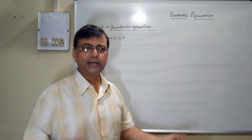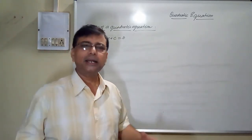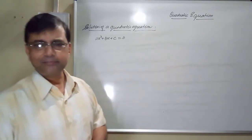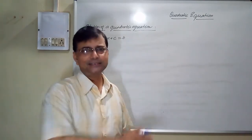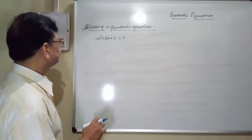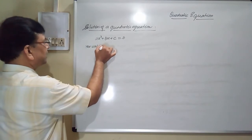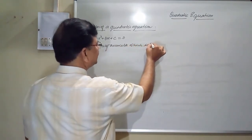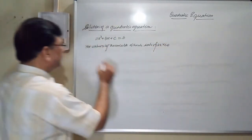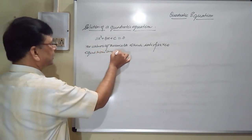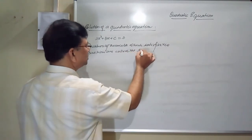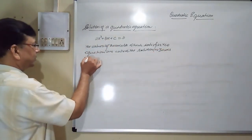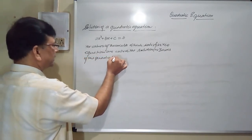In general, if a quadratic equation is given, we are supposed to find its solution — meaning we want the values of the variable, whether it is x, y, or any other variable, whose substitution satisfies the equation. The values of the variable which satisfy the equation are called the solution or zeros of the quadratic equation.